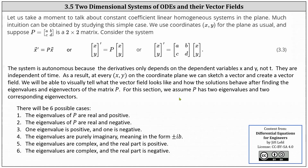For this section, we assume P has two eigenvalues and two corresponding eigenvectors. And there are six cases to consider. Number one, the eigenvalues of P are real and positive. Number two, the eigenvalues of P are real and negative. Number three, one eigenvalue is positive and one is negative. Number four, the eigenvalues are purely imaginary, meaning in the form of plus or minus iB. Number five, the eigenvalues are complex and the real part is positive. And number six, the eigenvalues are complex and the real part is negative.